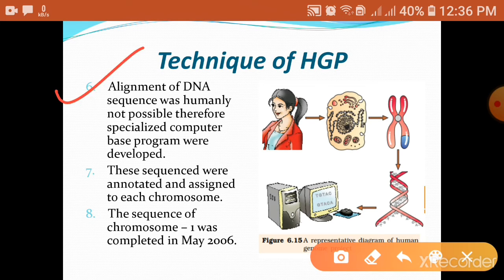The alignment of DNA sequences was humanly not possible, so specialized computer-based programs were developed. The sequences were annotated and assigned chromosome by chromosome. In this way, all 24 chromosomes were sequenced. The first chromosome sequenced was chromosome number 22, and the last chromosome to be sequenced was chromosome number 1, which was completed in May 2006 because chromosome number 1 is the largest chromosome.